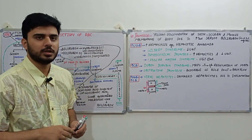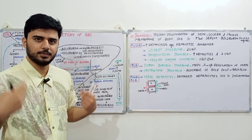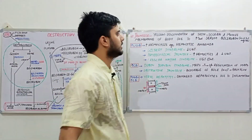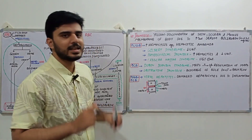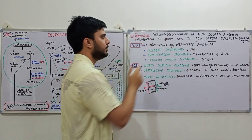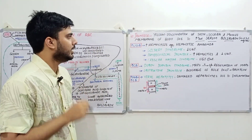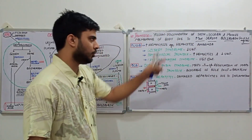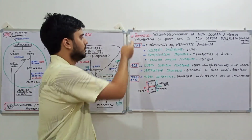The first question is: what is jaundice? Jaundice is the yellow discoloration of the skin, sclera, and mucous membranes of the whole body. This happens due to increased serum bilirubin — that is, an increased amount of bilirubin within the blood. The normal amount of bilirubin in the blood is 0.3 to 1 milligram per deciliter.